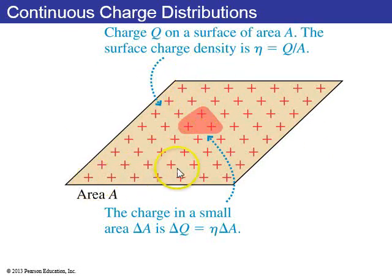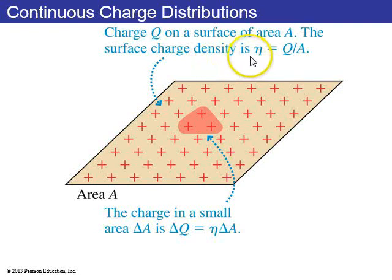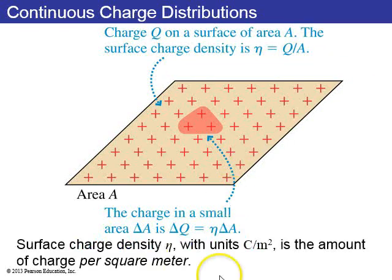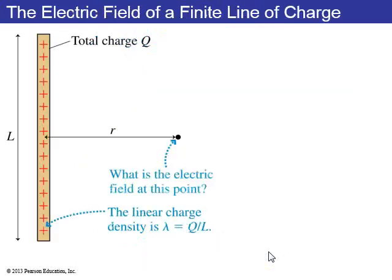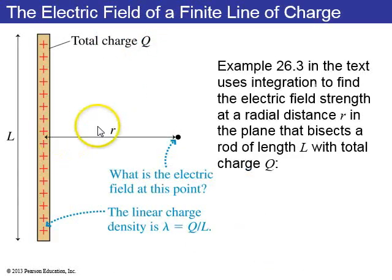You could also consider an area of charge with charge Q spread over an area A, giving a surface charge density eta equals Q over A, with units of coulombs per meter squared. To find the electric field, you have to do an integral.